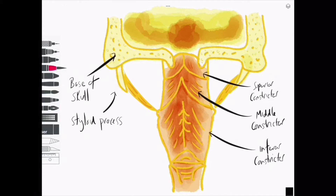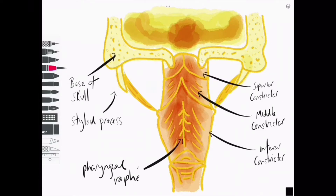When they contract they push food downwards, which is an involuntary movement. In the midline they join to form the pharyngeal raphe, which is a fancy way of saying the fibres of the muscles fuse, forming a visible ridge. The raphe attaches superiorly to the pharyngeal tubercle of the occipital bone.